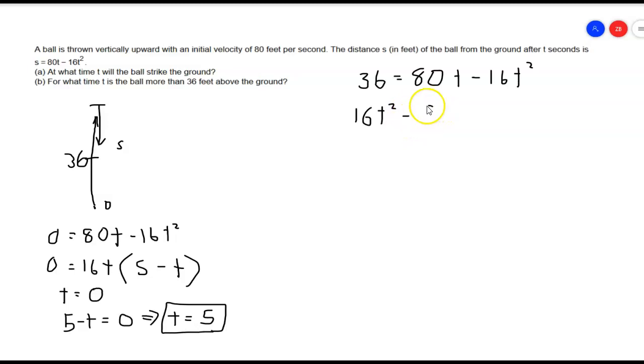That's bringing the 16t squared, adding 16t squared to both sides. It's going to be minus 80t, and it'll end up being plus 36, and that's going to be equal to 0. This is the quadratic equation set equal to 0.